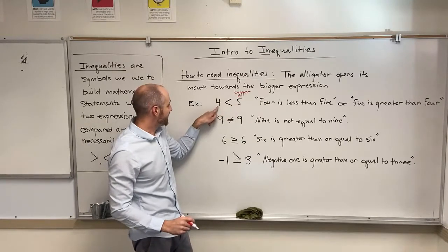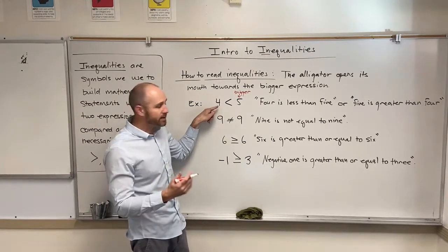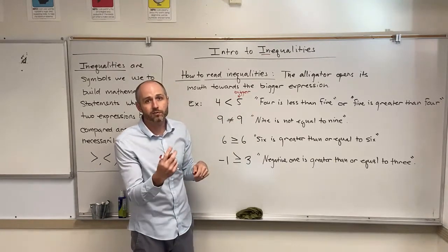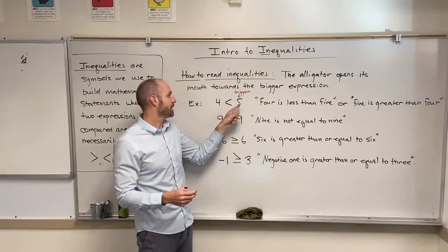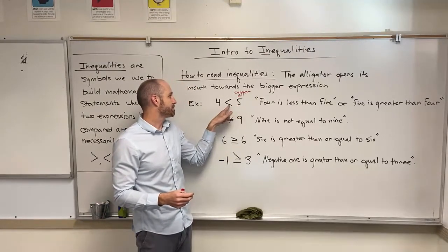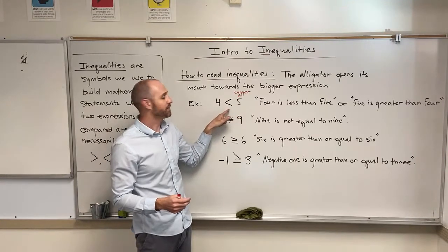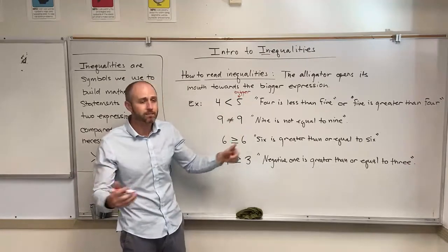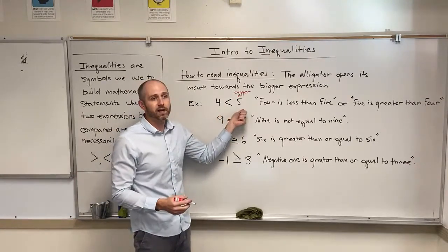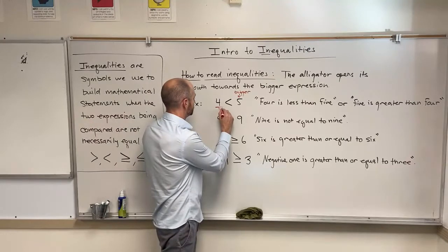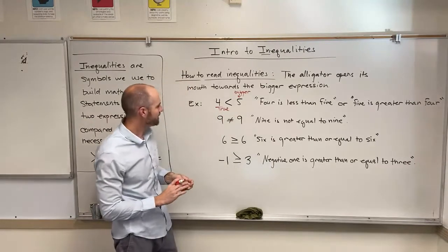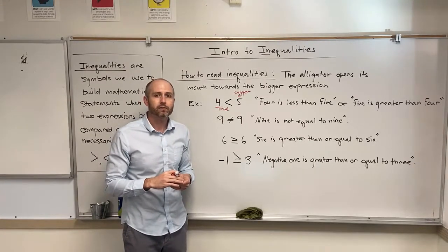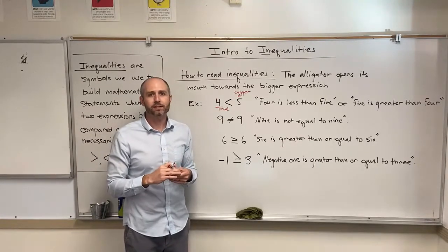So that side is bigger, meaning the left side is less. The way we read it from left to right is: four is less than five. You can also read the statement from right to left: five is bigger than four, or in other words, five is greater than four. This is a true statement — four is less than five, five is greater than four.